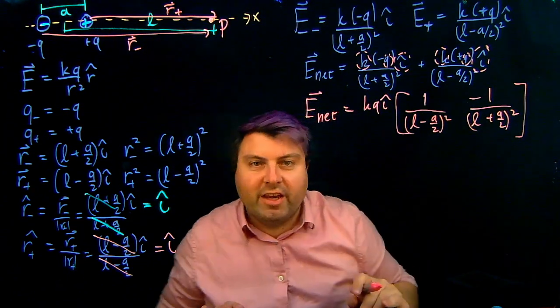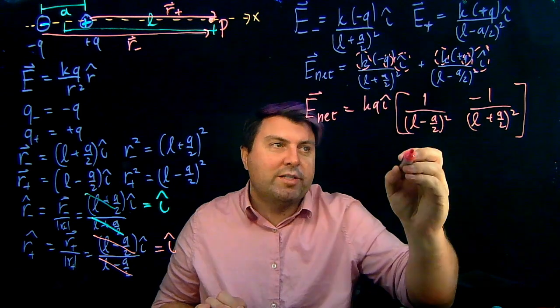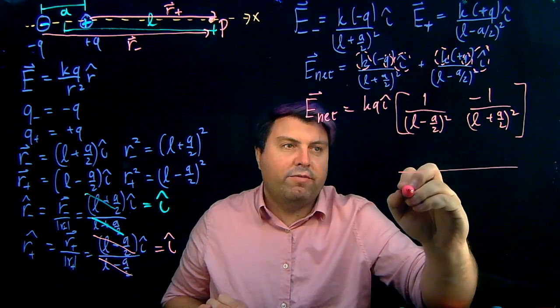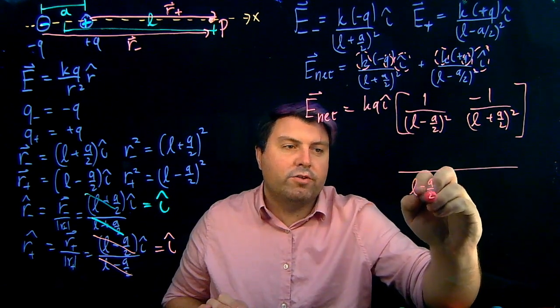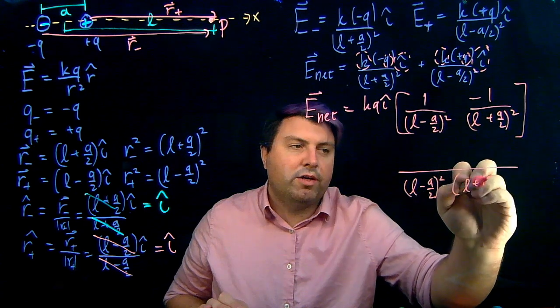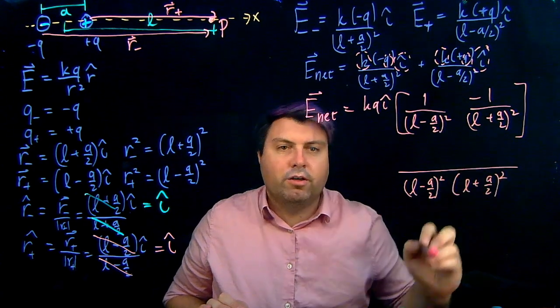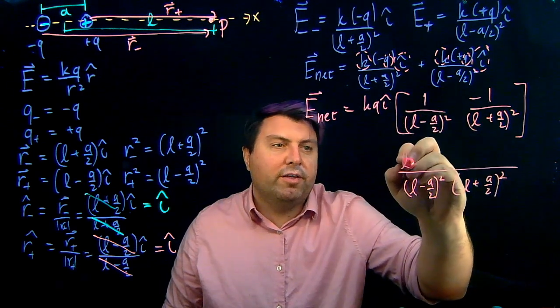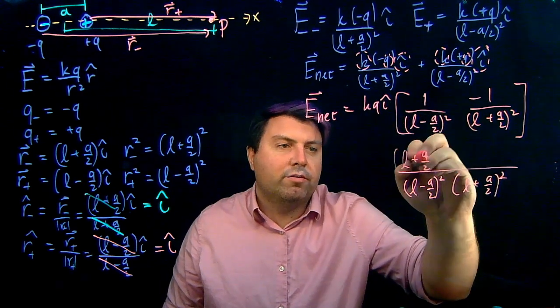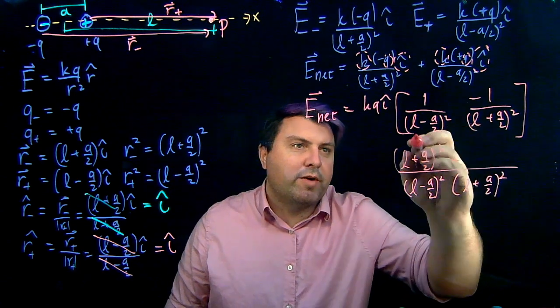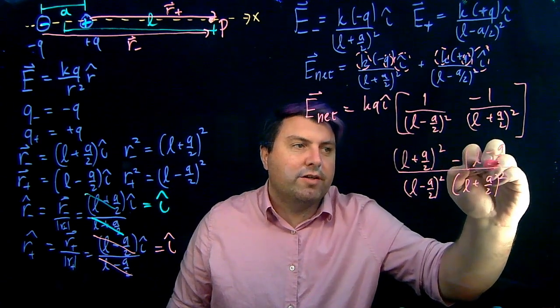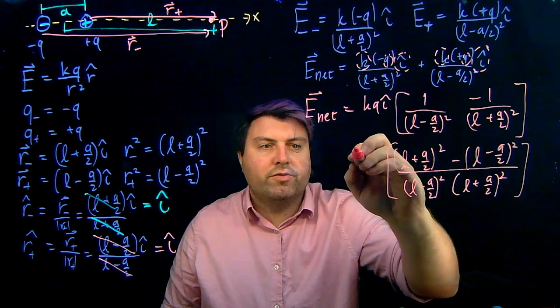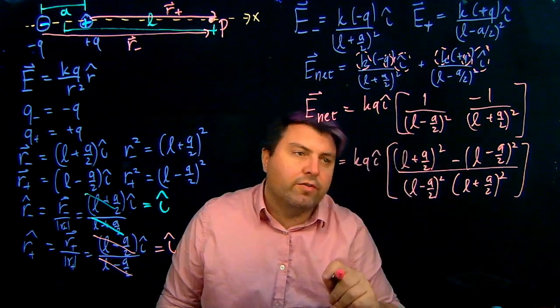Now, we have a chance to do a little bit of simplification, so let's do it. And one simplification thing we can do is we can do some cross multiply to get a combined factor term of L minus A over 2 quantity squared L plus A over 2 quantity squared. So both of them have the same denominator. If we do that, then this term comes up over here, L plus A over 2 quantity squared, then we have this minus, and this term comes up here, L minus A over 2 quantity squared. And of course, we still have our KQ I hat over here.